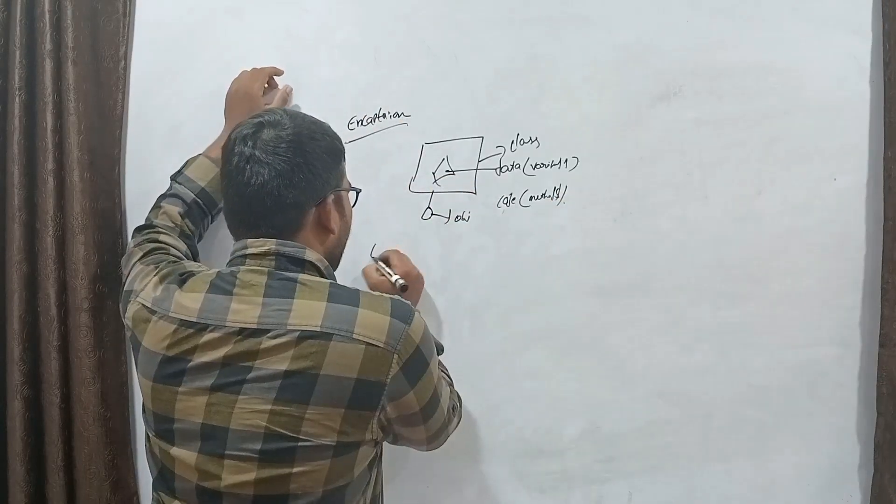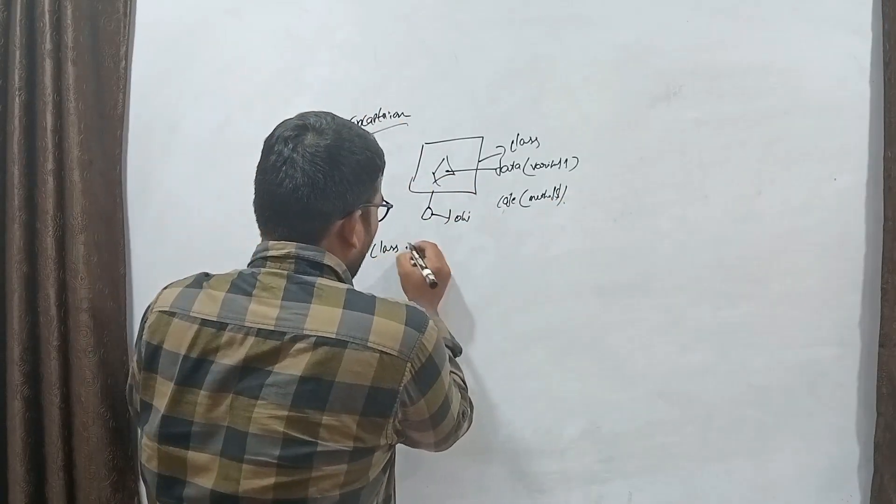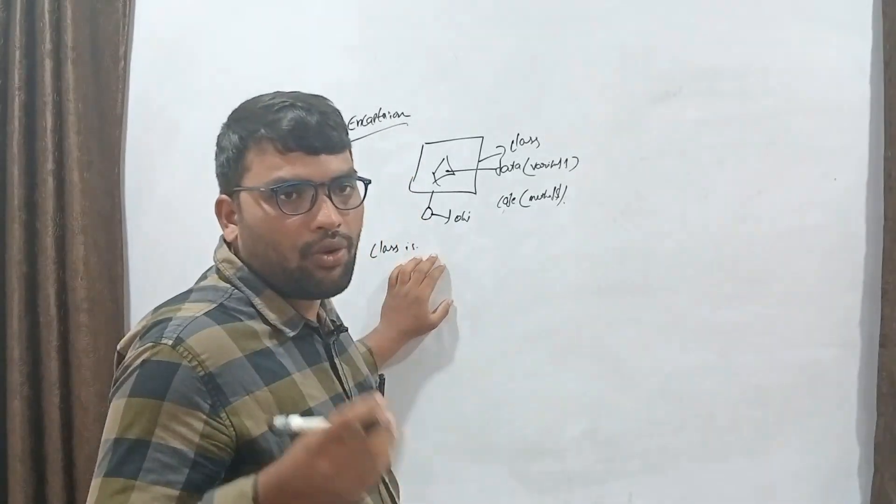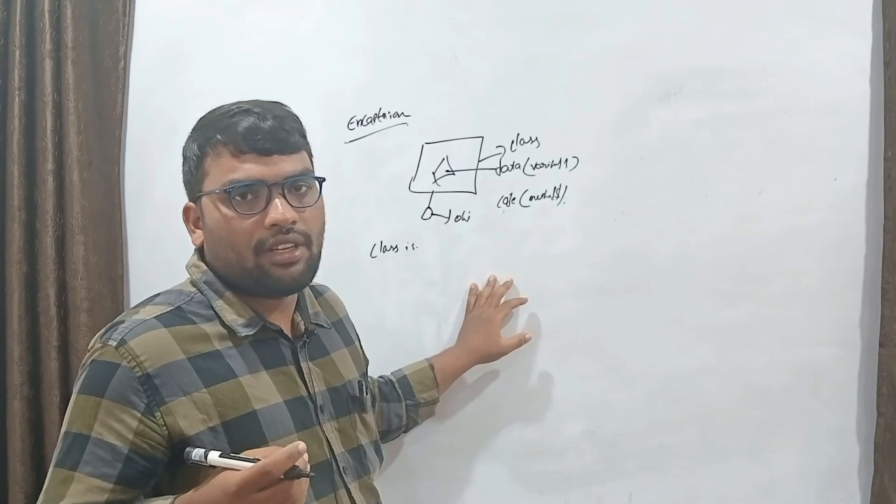Variables and code means methods. And class, class is a collection of the code and data. Data means variables and code means methods.